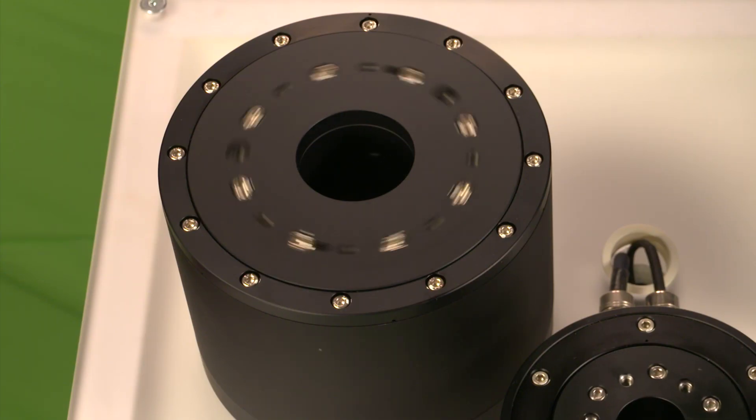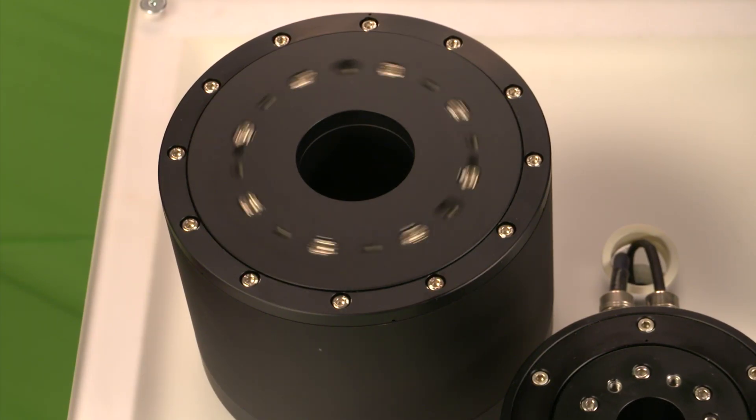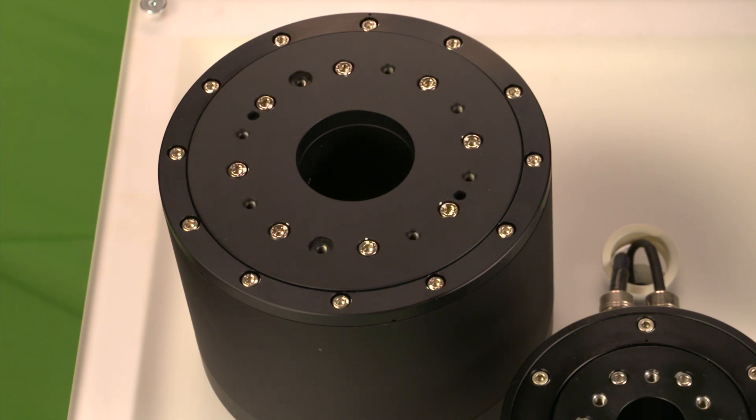The hollow core allows for hoses or cables to be routed through the motor for flexibility of the machine design.